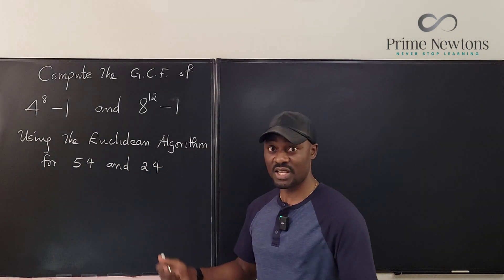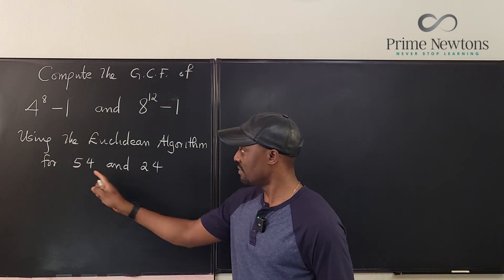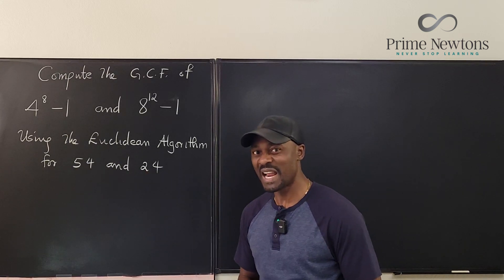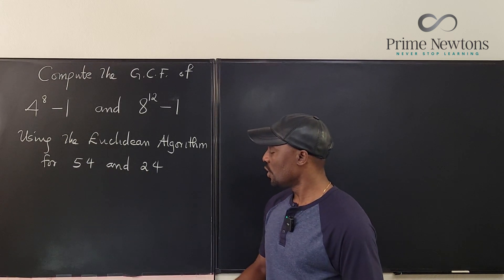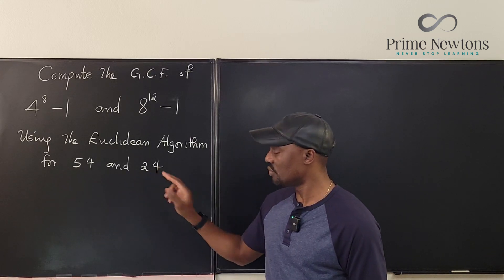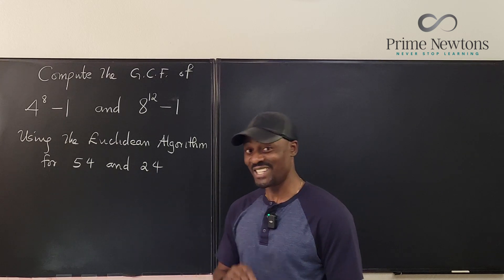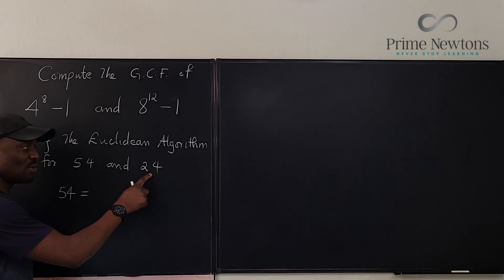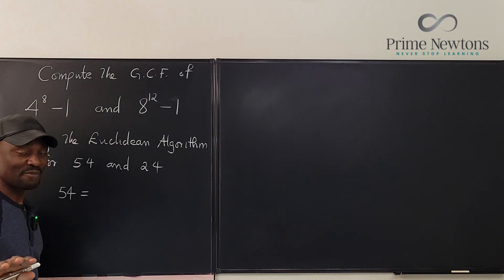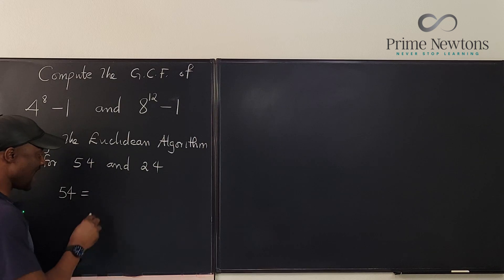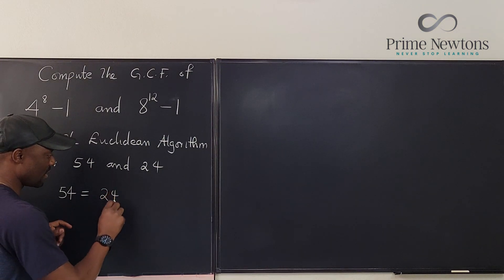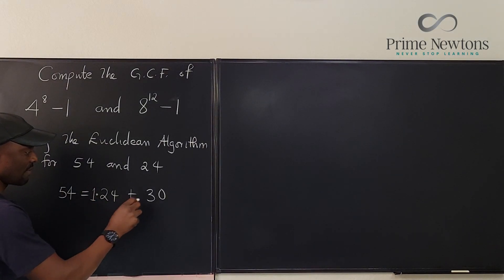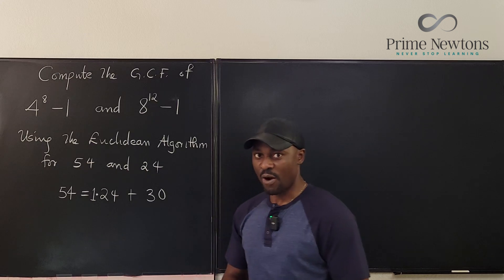Obviously I know the answer is 6 — the biggest number that divides both 54 and 24. But assuming I didn't know, what would you do? You're going to take 54 and write it in terms of 24. I'm going to say that 54 is equal to 1 times 24 plus 30.